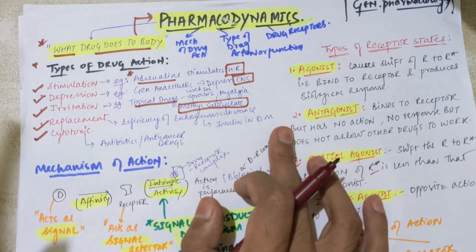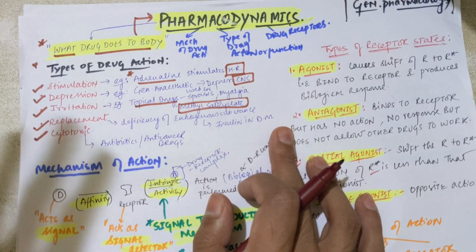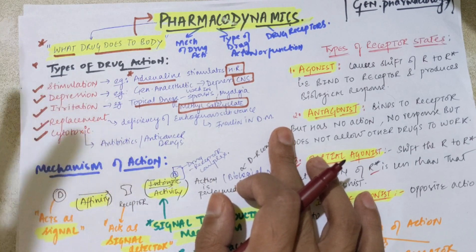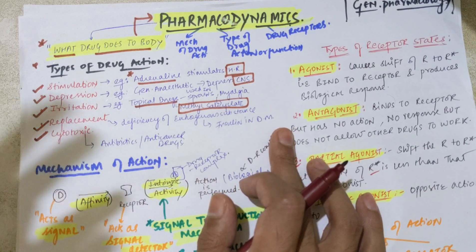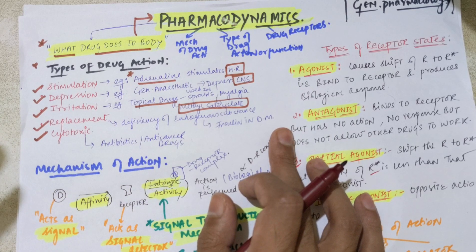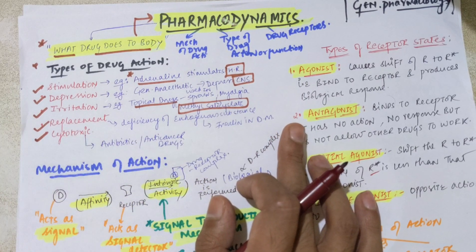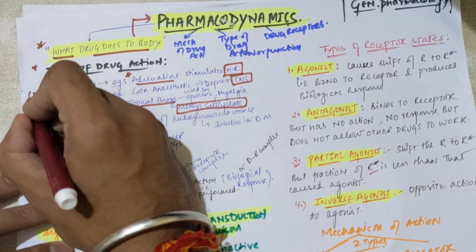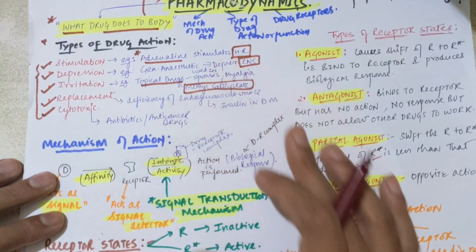Next we have cytotoxic action. The meaning of cytotoxic is to kill cancer cells or any type of infective organism inside the body. For bacterial diseases we use antibiotics, and for cancer cells we use anti-cancer drugs. These are the types of actions we have with respect to drugs.